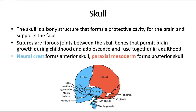The skull is a bony structure that forms a protective cavity for the brain and it supports the face. Sutures are fibrous joints unique to the skull between the skull bones that allow for brain growth during childhood and adolescence, and finally fuse together in adulthood once brain growth is complete.